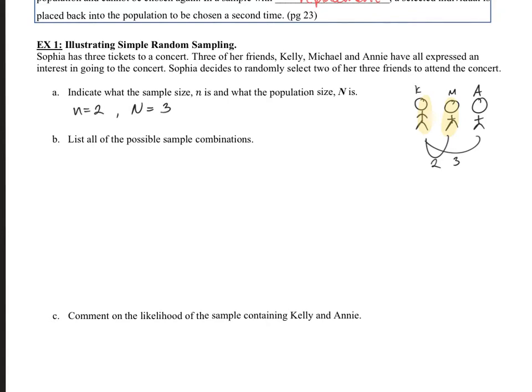Well, what would the sample be? And what's the population? So she has Kelly, Michael, and Annie. So this is what she starts with. And then she's going to pick from them two people. So the population is three and the sample is going to be two. So sample size n is two and the population capital N is three. Next is to list all of the possible sample combinations. What I'm going to do is stick with just K, M, and A instead of writing out their full names. So what is one of the first possibilities?